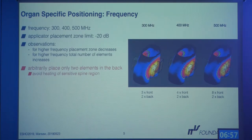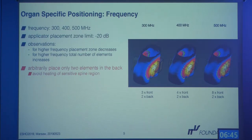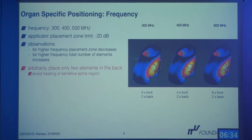Repeating this procedure for different frequencies reveals that different numbers of elements can be placed in the optimal region, and the area itself changes with frequency. This can be adapted for a specific patient or target, and the modular array has the advantage that we can avoid placing elements in front of heat-sensitive tissues such as the spine.